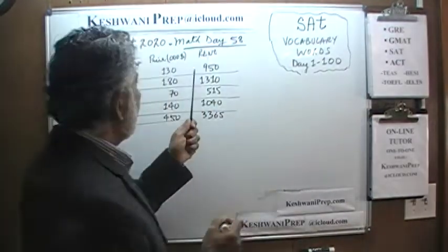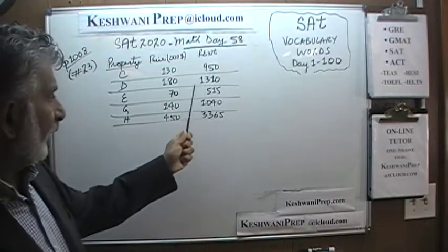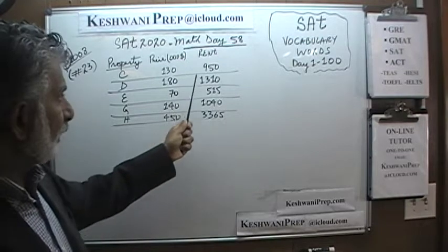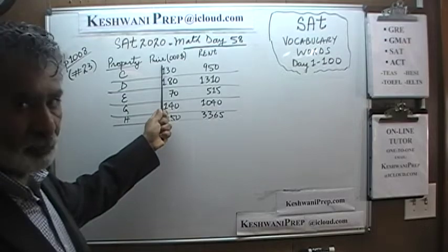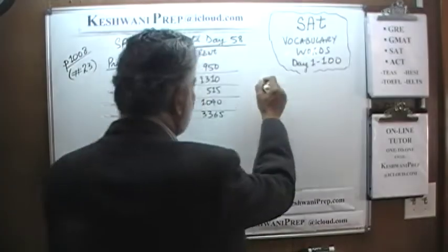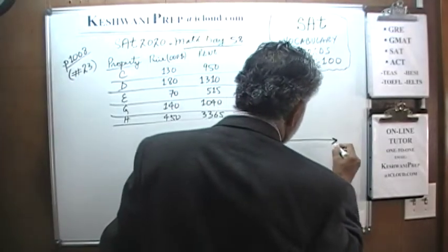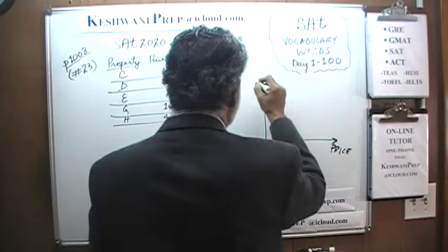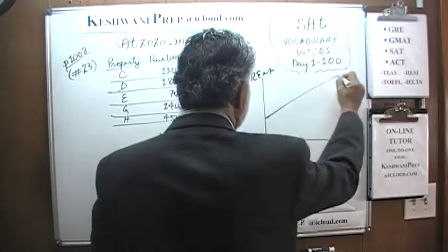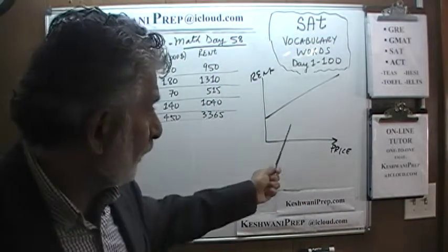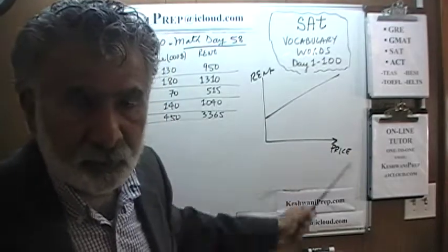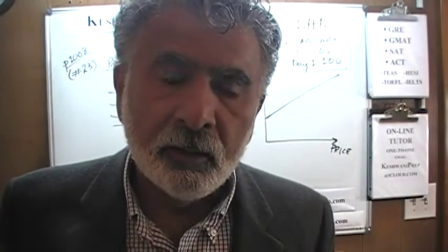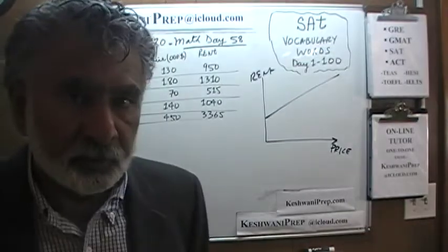We are told that the relationship is linear. The amount of rent that we charge for a given property depends on what we paid for it — price is the independent variable. So if you were to plot it, price is on the x-axis and rent is on the y-axis. If we can recognize the slope, we can figure out which of the four equations is the right answer. That's all we have to do here.